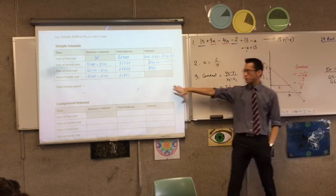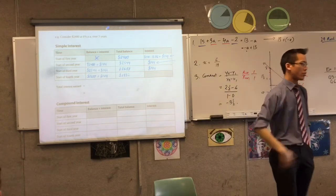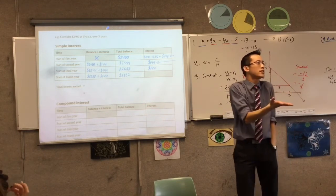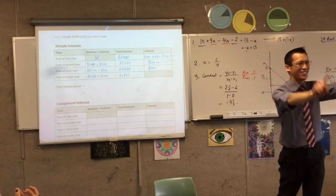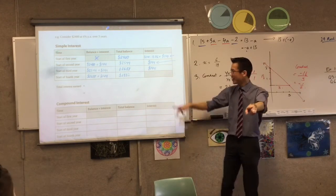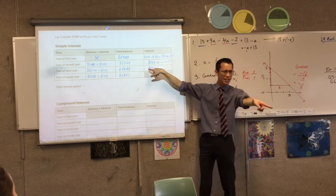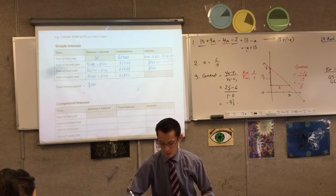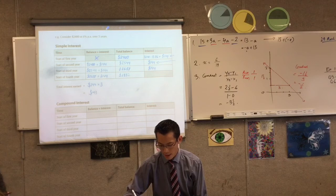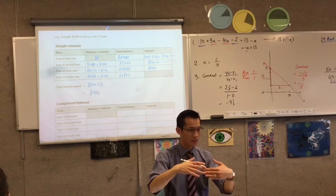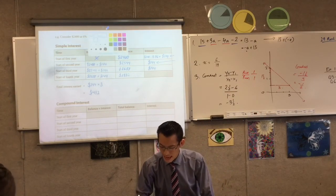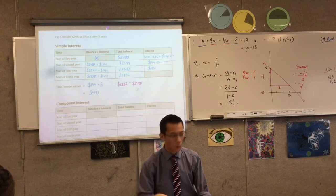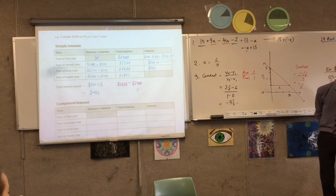So simple interest gives you the same amount — 144 every year, year in year out — all based on the initial value. Now, just to close this off, a concluding question is: what's the total amount of interest? There are actually two ways to work this out. First, take the three annual interest amounts and add them: 144 times 3 equals 432. Alternatively, look at where you end and subtract where you started: 2,832 minus 2,400 also gives you 432. Both methods give the same answer.